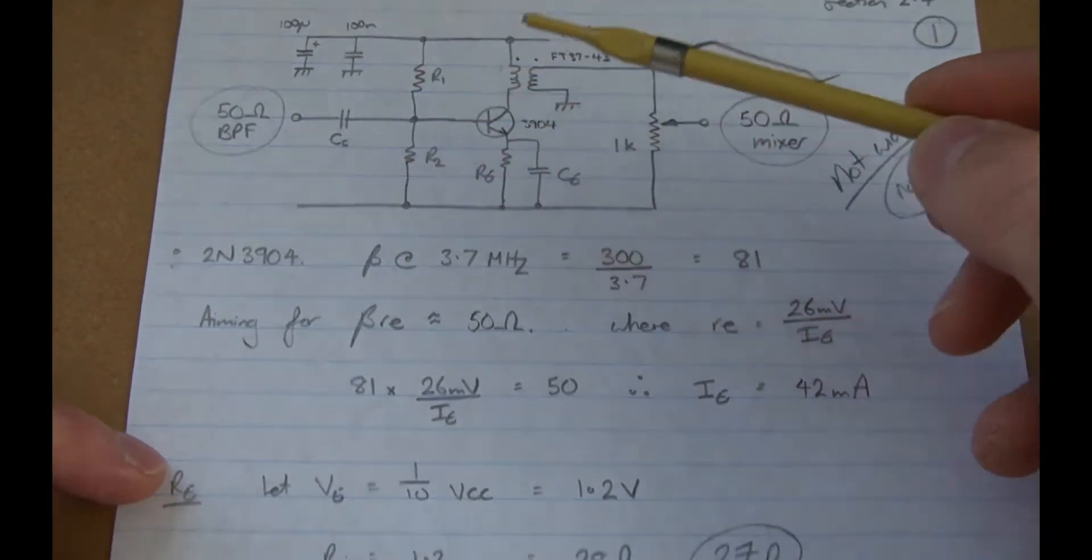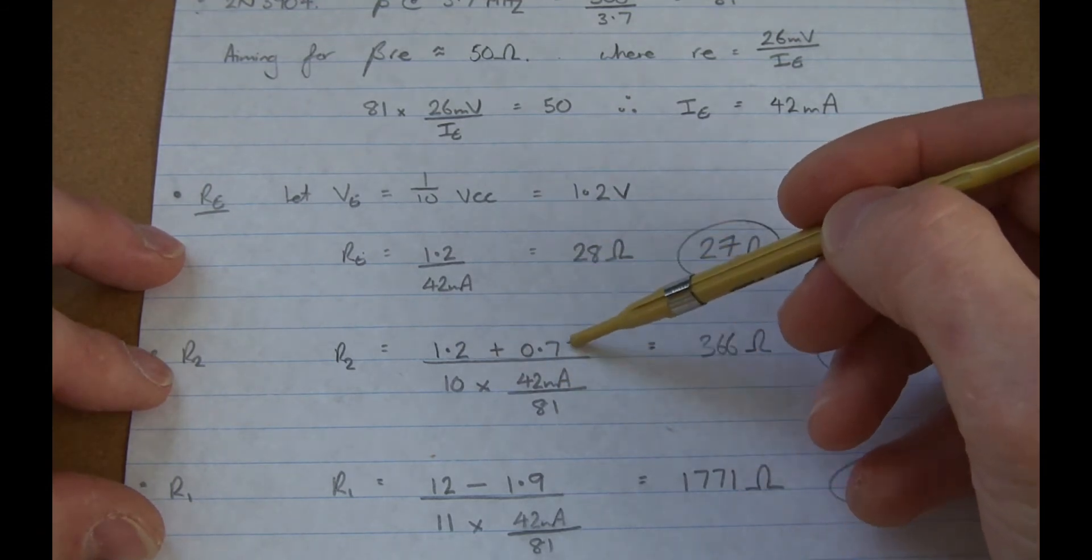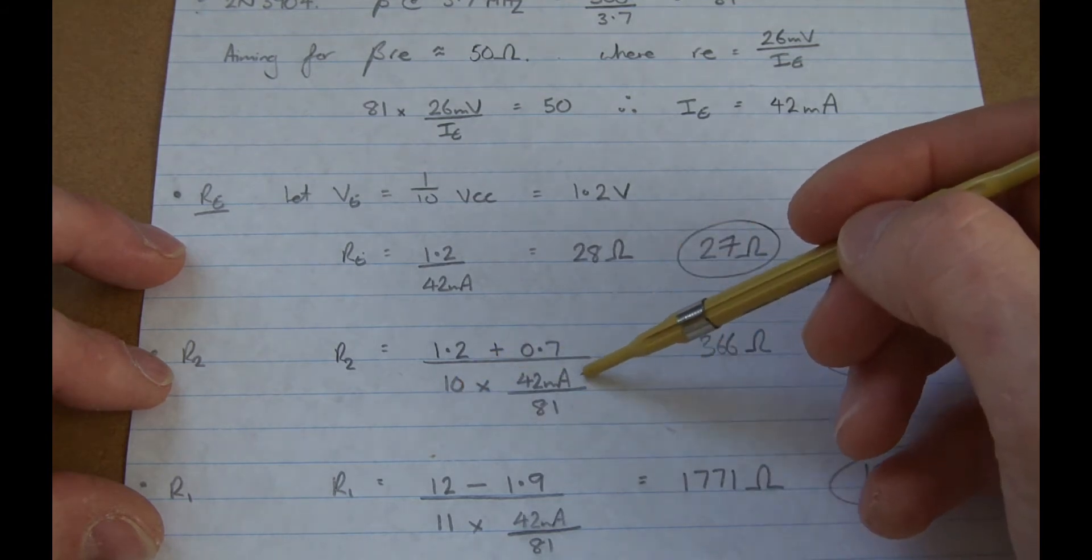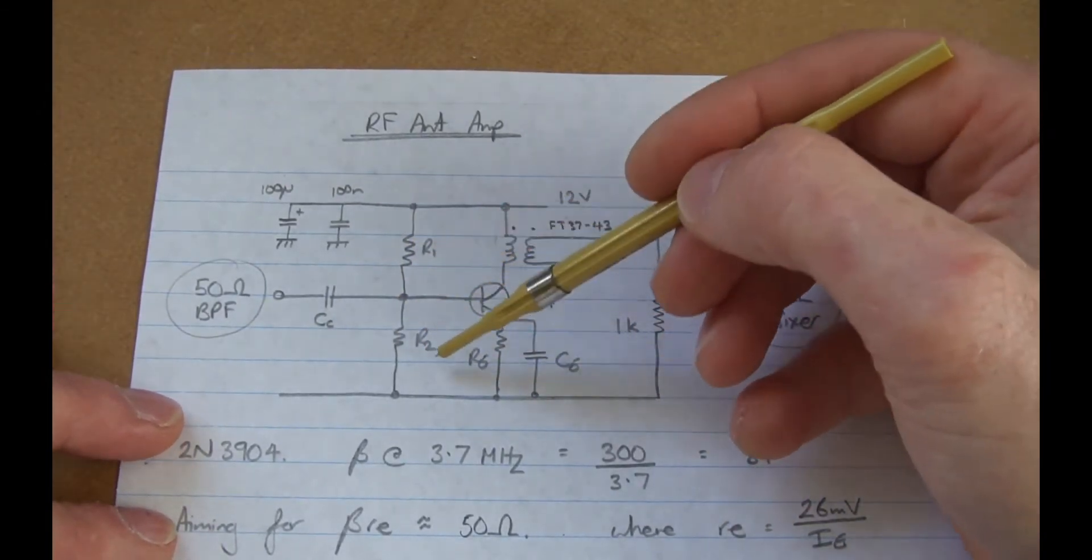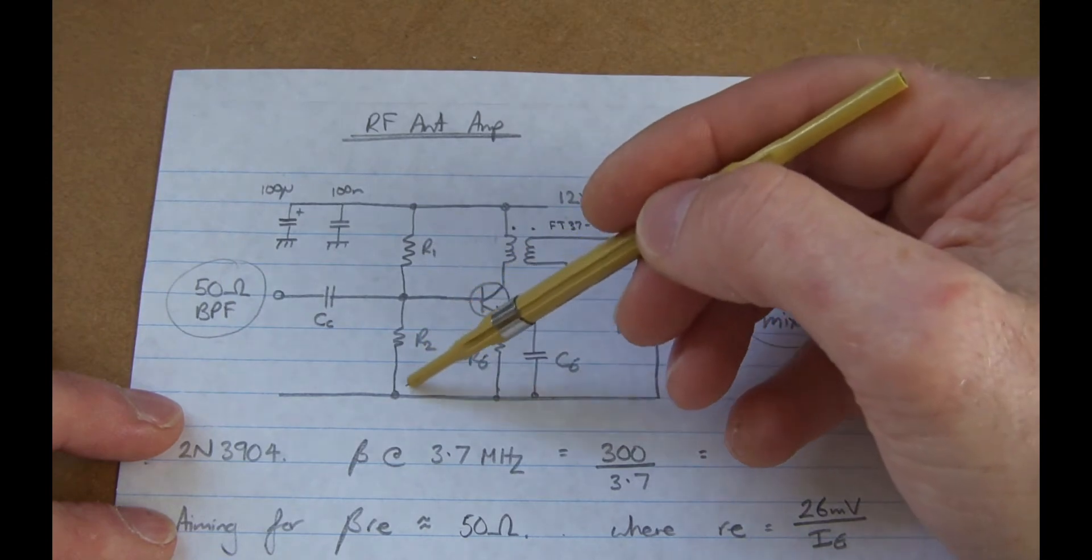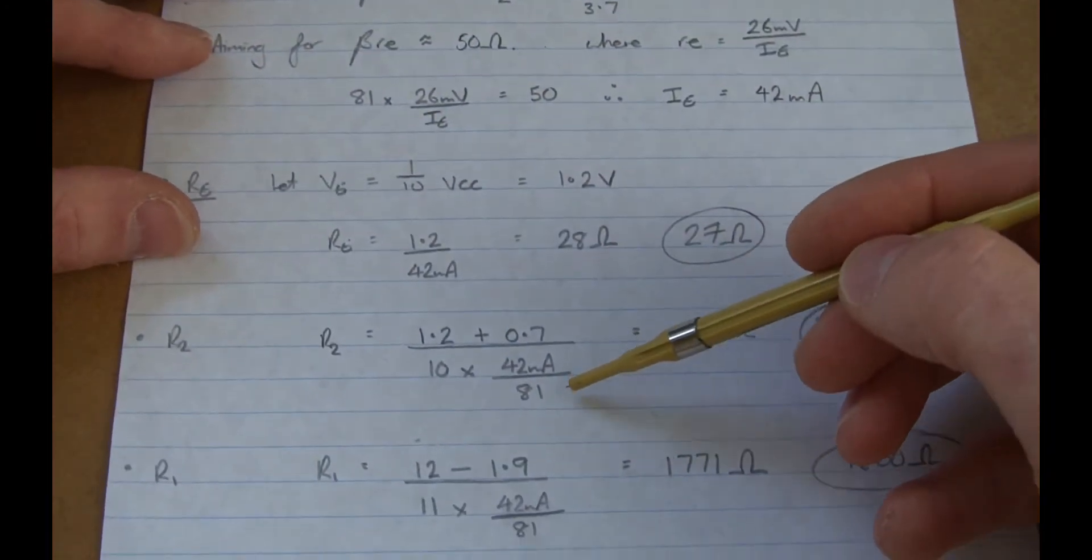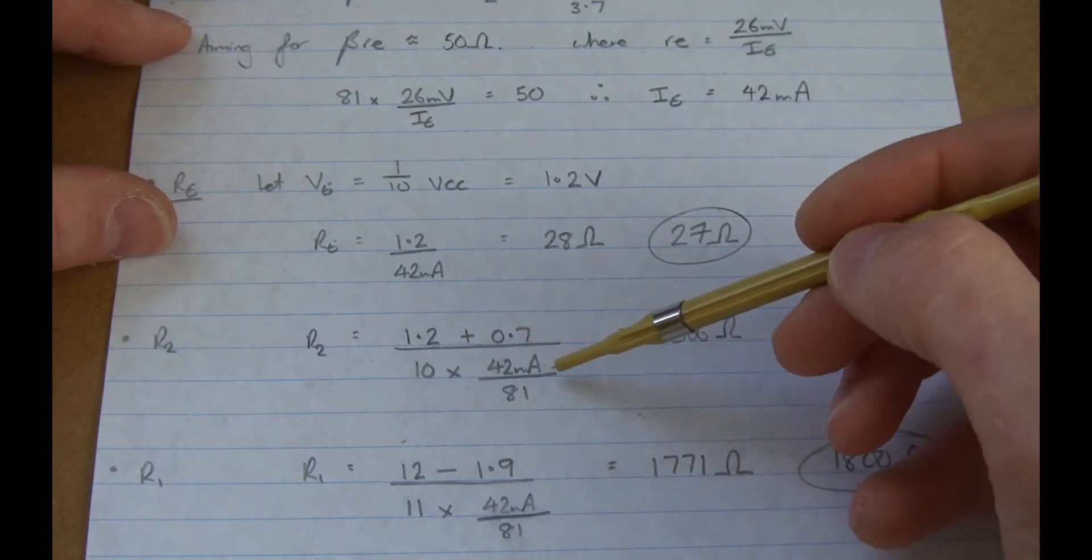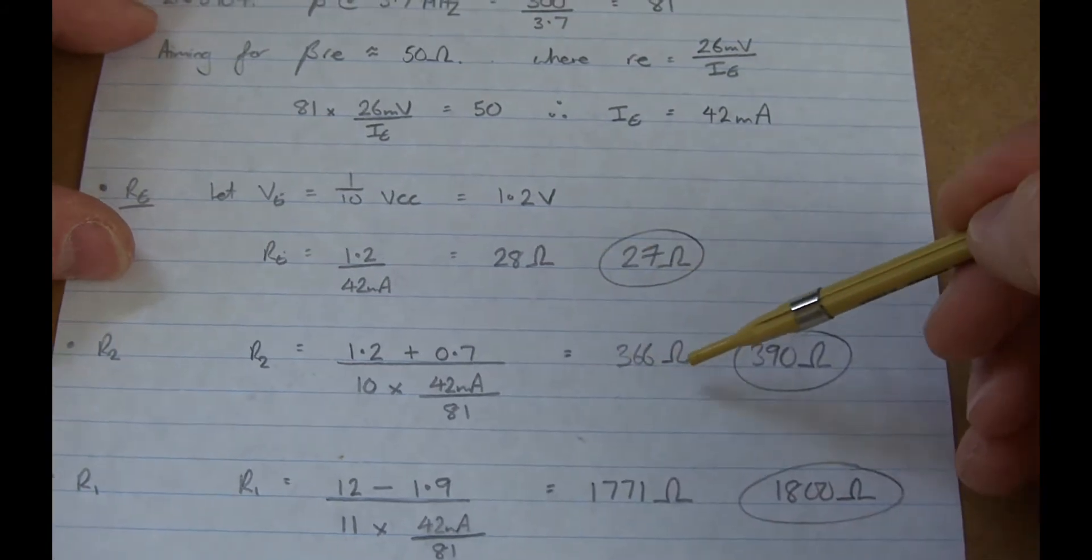For R2, that's the bottom of the voltage divider biasing. The voltage across that device is the emitter voltage, plus 0.7 for that forward bias junction, divided by 10 times the base current. Because if you remember, in order to make this voltage divider nice and stiff, as they say, we want to have at least 10 times the base current. So base current's coming out of here, so this one here will have 10 times, and then this one will have 10 plus that additional base current will be 11 times. So we can use that logic down here. So 1.2 plus 0.7 divided by 10 times IC divided by 81, which is beta, equals 366, and we'll use the nearest value of 390.